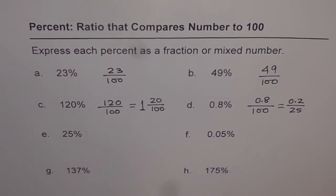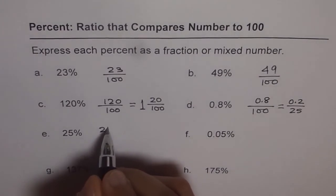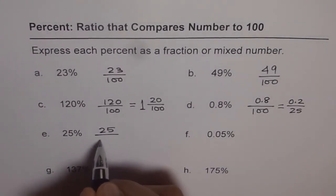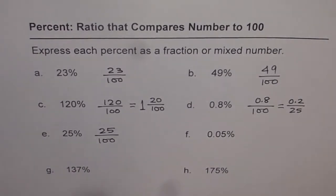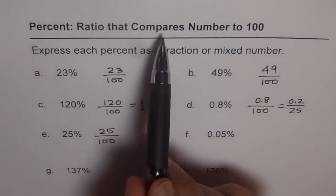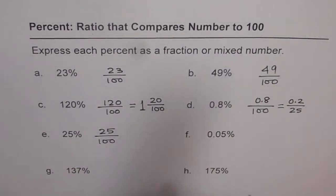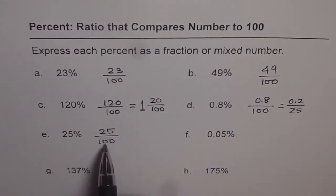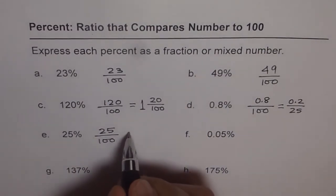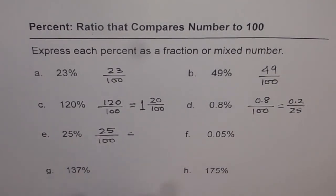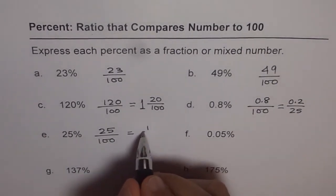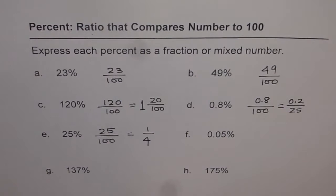When we say 25 percent, what are we trying to say? We are trying to say 25 over 100. So just a reminder, that percent is a ratio that compares a number to 100. That is what it is. So 25 percent means 25 over 100. Now if you want to simplify it, you can divide both by 25. You get 1 over 4.